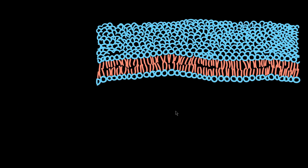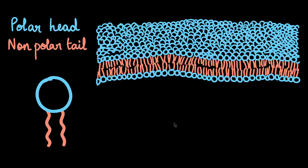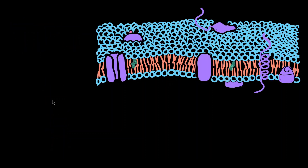In a cell membrane, phospholipids are the major components. They are made up of two parts: a polar head, which usually faces the aqueous environment — either outside the cell or the cytoplasm inside — and a non-polar hydrophobic tail, which faces away from these aqueous environments. Proteins are scattered throughout the lipid bilayer. Usually, in a cell membrane, for every 25 lipid molecules, there is one protein molecule.